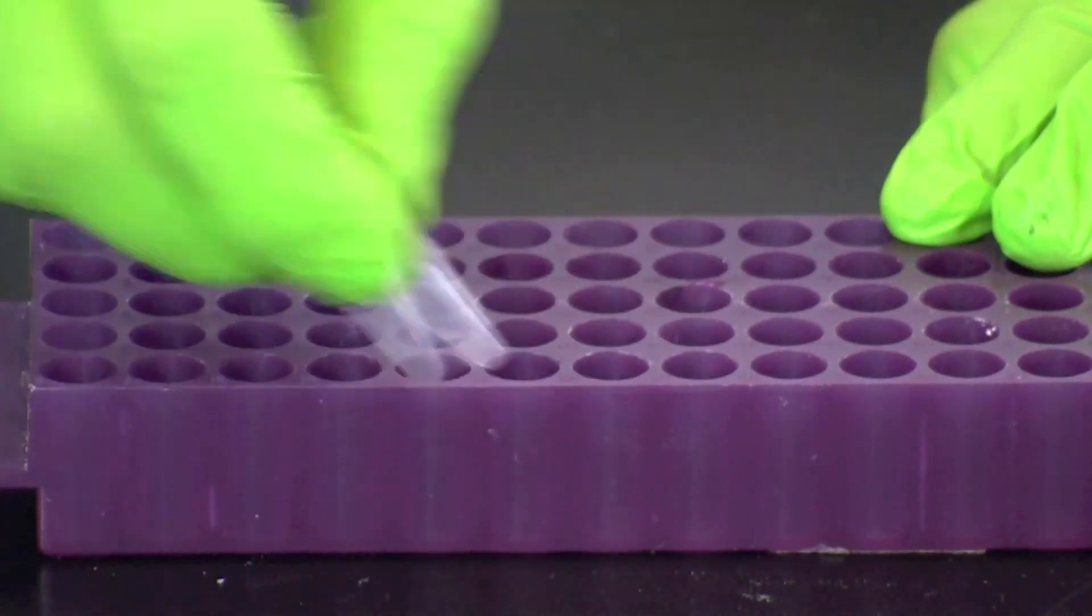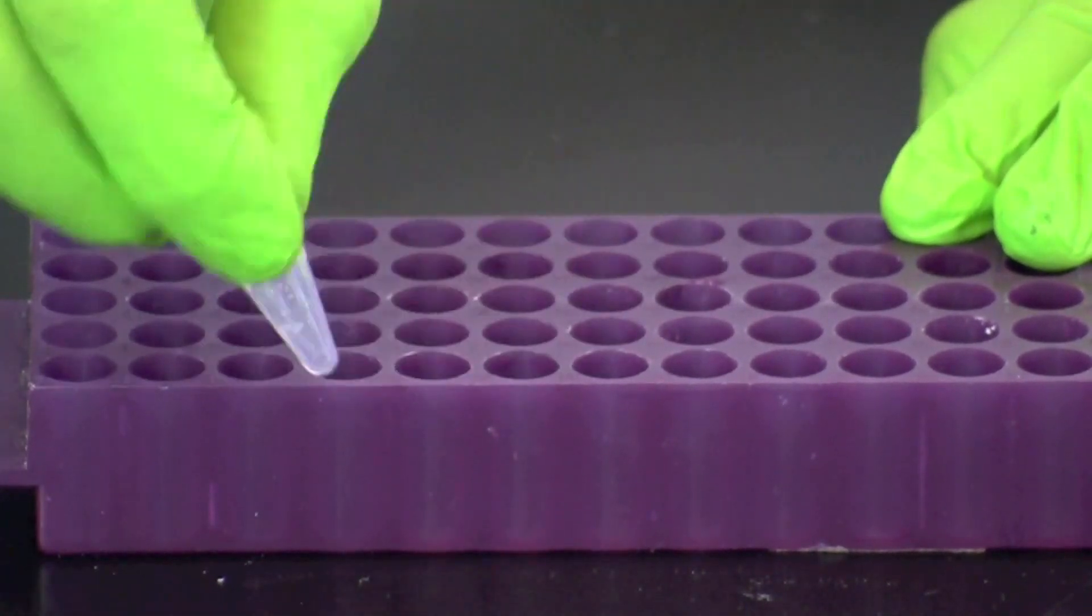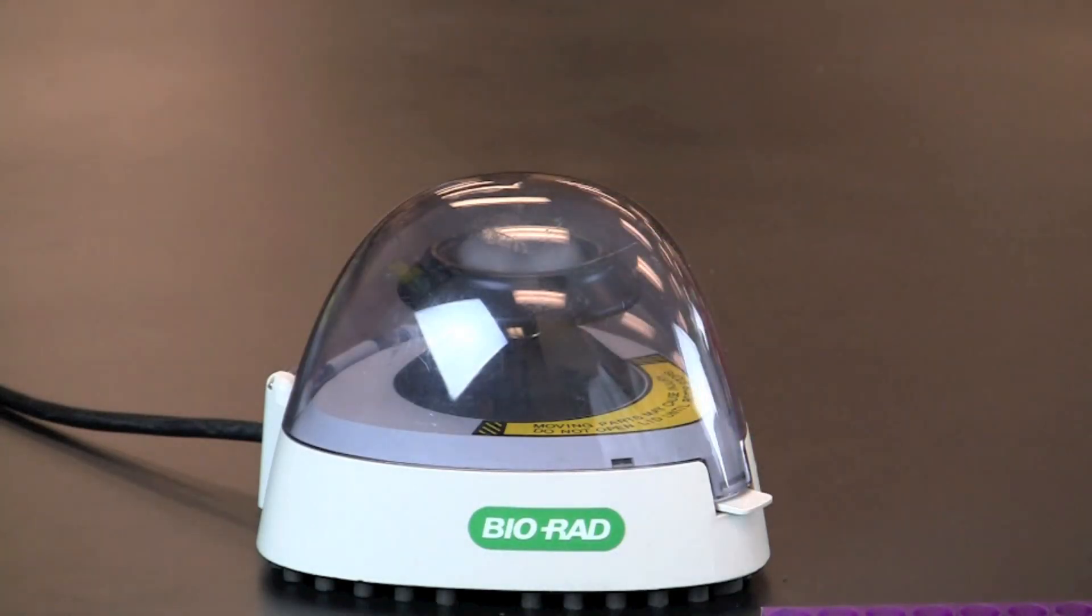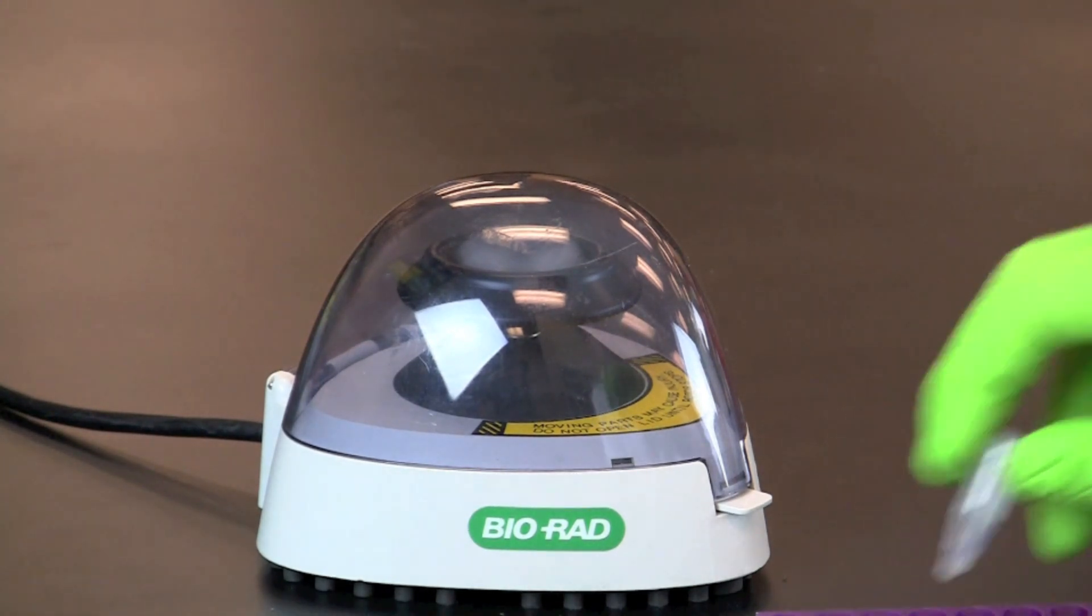After the incubation, vortex or shake the tubes. Place the tubes into the microcentrifuge in a balanced configuration. Centrifuge at top speed for 5 minutes. If using a mini centrifuge that can only reach 2000 G's, centrifuge for 10 minutes.